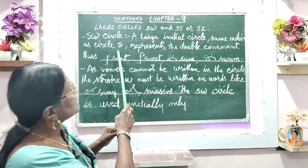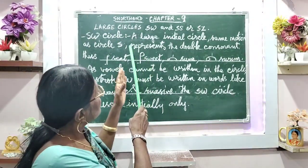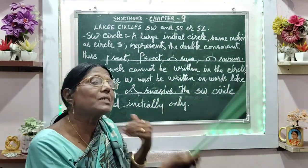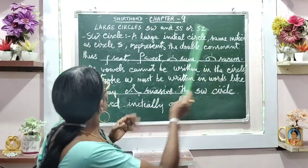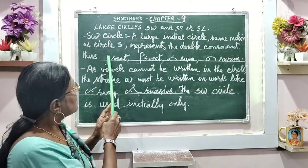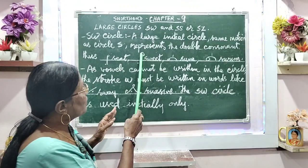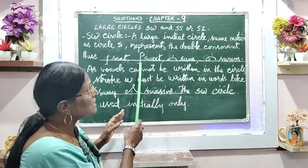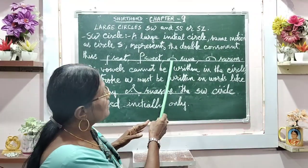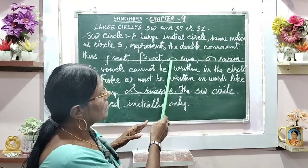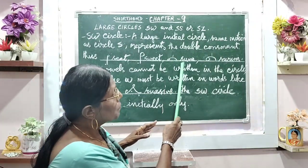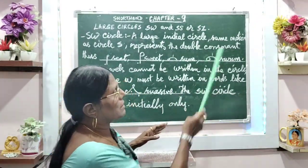Same motion as circle S. This particular large circle represents the double consonant. Here, sample C — C is a small circle, but when it is a larger circle, that is the SW sound. So, 'sum' uses a smaller circle, but SW uses a larger circle.